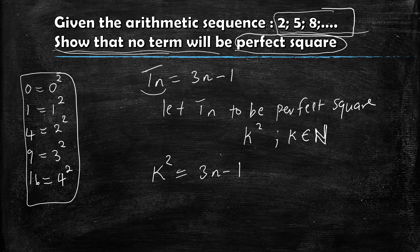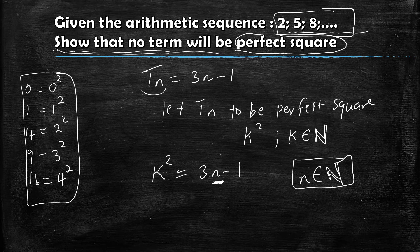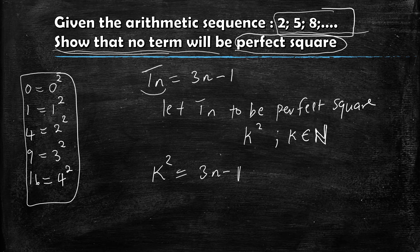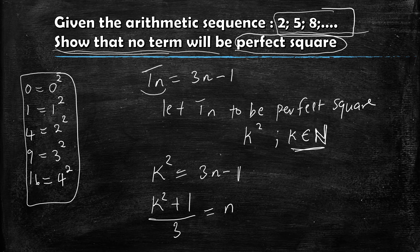We are now going to calculate n. Remember: if there is a perfect square, n must be an element of the natural numbers. We equated the sequence with a perfect square to check if one exists. Solving for n: take 1 to the other side to get 3n = k² + 1, then divide both sides by 3. So n = (k² + 1) / 3.